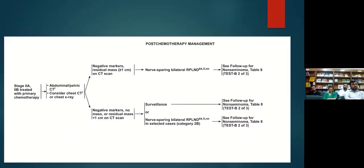In the post-chemotherapy RPLND algorithm, stage 2a and 2b are primarily treated with chemotherapy, followed by a repeat abdominal CT scan. For a residual mass greater than one centimeter, we perform nerve-sparing bilateral RPLND. For residual mass less than one centimeter, we have an option of surveillance, but if greater than one centimeter, we proceed with nerve-sparing bilateral RPLND.